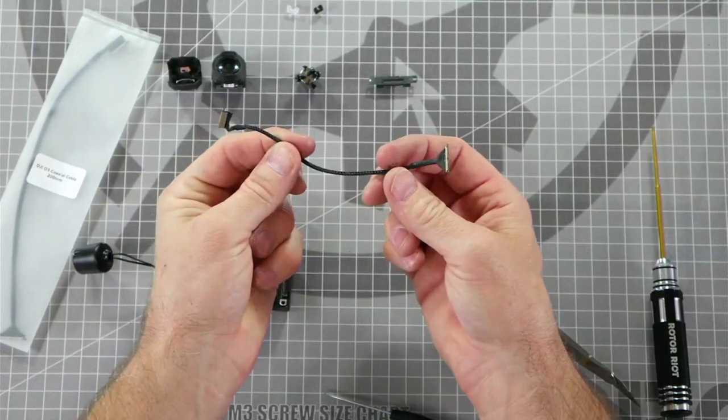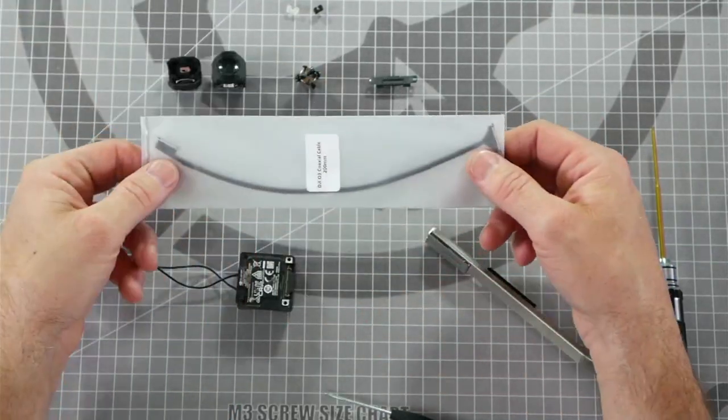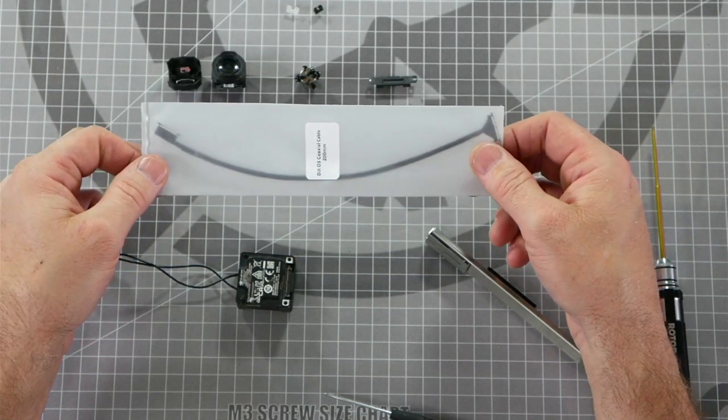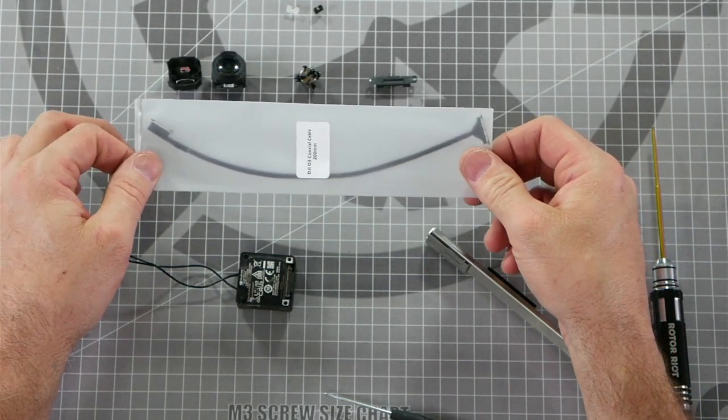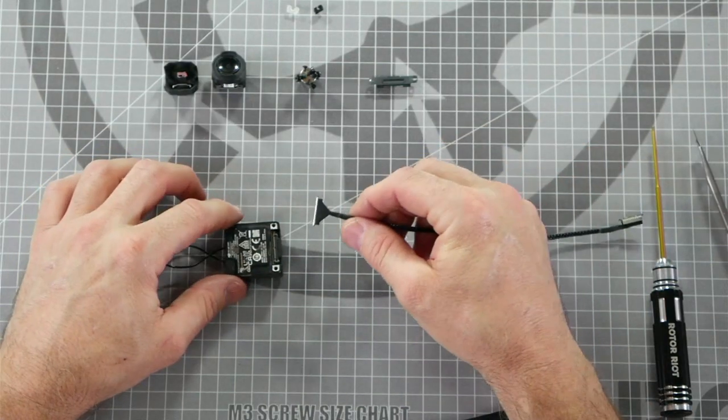Now that we have our camera cable removed we can install the new cable. I've purchased a longer version of the cable. This is a 200 millimeter version to allow me to make a custom camera mount that reaches farther forward than the standard cable does. We're going to install this back in reverse order.